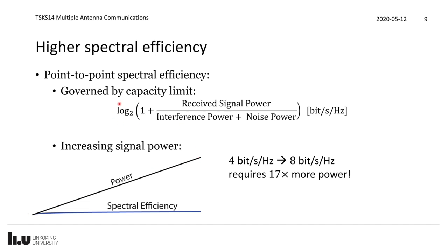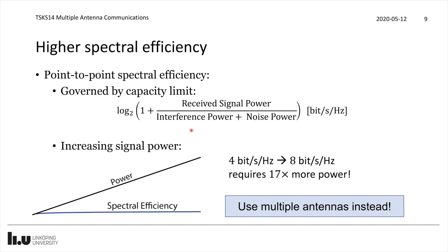For example, if we have 4 bits per second per hertz in our setup and would like to get 8 bits per second per hertz, we need to use 17 times more power in our transmission. And if we increase the signal power by 17 times, there is a big risk that interfering users would also ramp up their power, resulting in a zero-sum game. This is particularly where multiple antennas become important — to increase the spectral efficiency in a fundamental manner, something that hasn't been done in previous evolutions of cellular networks.